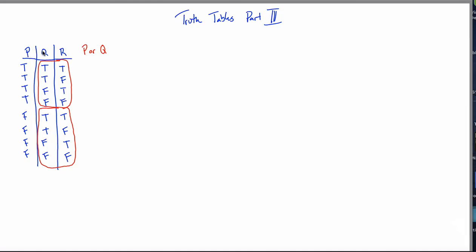Looking at each row: yeah, there's two T's — put a T. Yep, there's one. Yep, there's one. Yep, there's one. Yep, there's one. Down here, I don't see any T's, so P or Q gets an F. Similarly, on the last row, it gets an F. There are probably shortcuts you could memorize, but I wouldn't recommend it. P or Q is just saying: look at the P and Q columns and ask the question you learned in the previous video. Yeah, there are more rows, but you're just asking eight questions instead of four. No big deal. That's how you do P or Q.